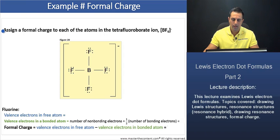Example formal charge. Assign a formal charge to each of the atoms in tetrafluoroborate ion. We're given the formula as well as its connectivity here in figure 20. Now, we'll begin here with fluorine. We'll find formal charge for fluorine and then subsequently for the boron atom. For fluorine, let's first go ahead and find the number of valence electrons in a free fluorine atom. We know that fluorine is a main group seven element. Thus, a neutral fluorine atom is going to have seven valence electrons.